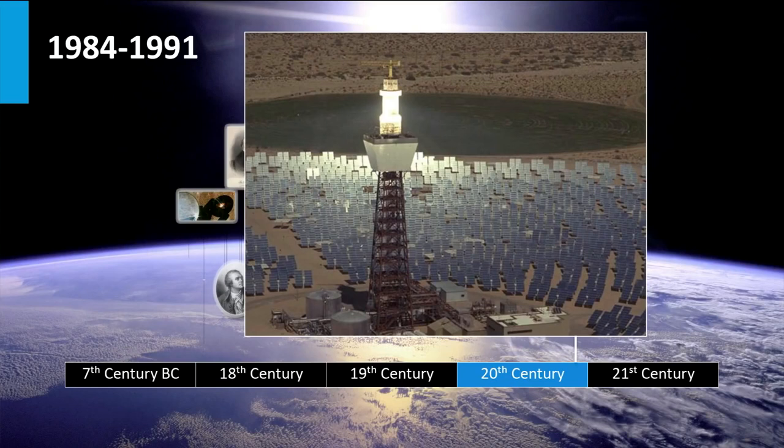From 1984 up to 1991 the largest solar thermal energy generating facility in the world was built. These 9 solar plants built in the Mojave Desert in California have a combined capacity of 354 MW.